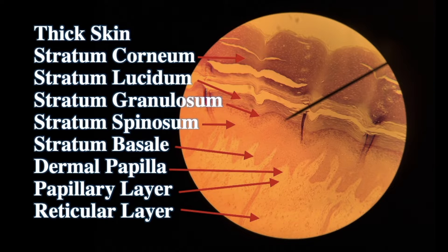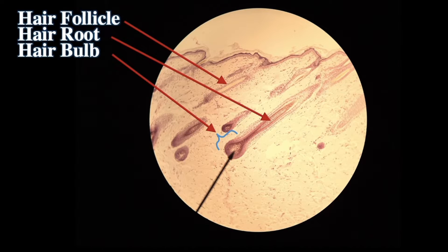So in just those few minutes, we've covered all layers of thin and thick skin. If you're asked for all possible sub-layers of thick skin, it's five epidermis layers plus two dermis layers — that's seven. In thin skin, you can have up to six: four in the epidermis and two in the dermis. The hypodermis — subcutaneous fat, adipose tissue — we don't consider part of the integument.